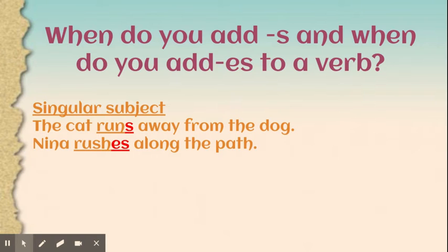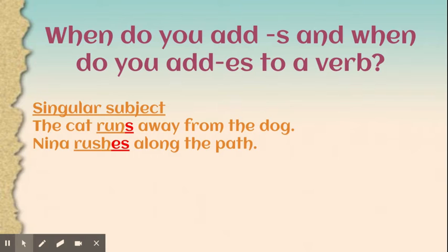The big question is: when do you add -s and when do you add -es to a verb? We know that singular subjects — like 'the cat runs away from the dog' — need an -s on the verb. The cat is the singular subject; we're talking about one cat, and the verb 'runs' has the -s. But for a sentence like 'Nina rushes along the path,' Nina is a singular subject and we had to add -es.